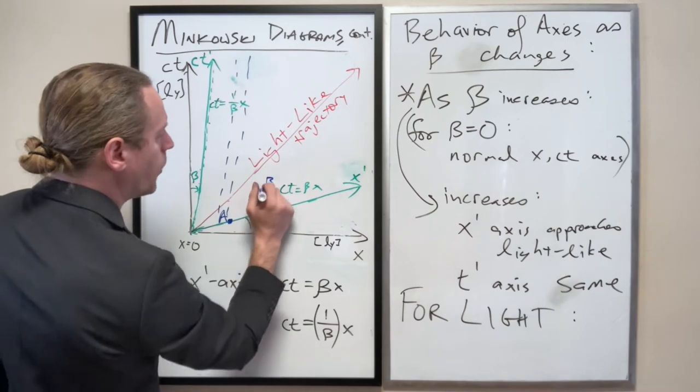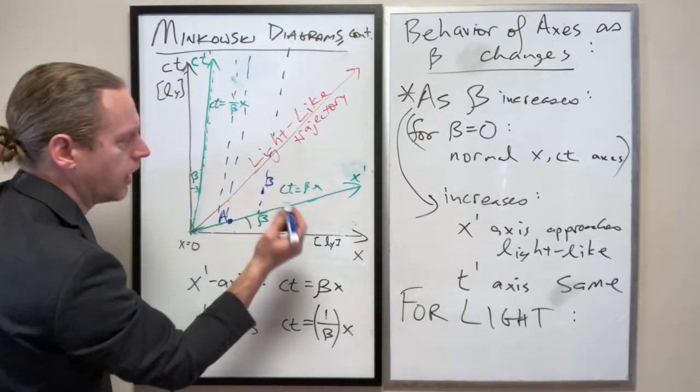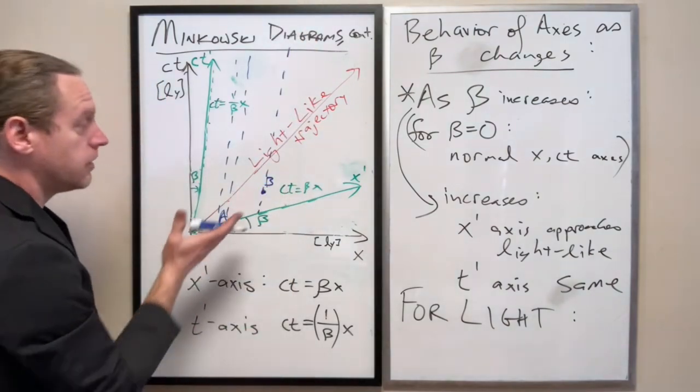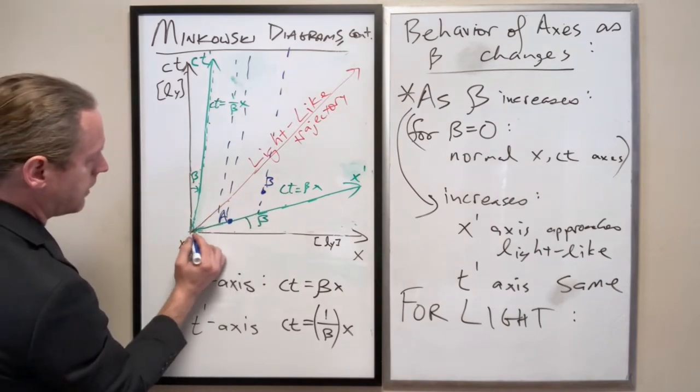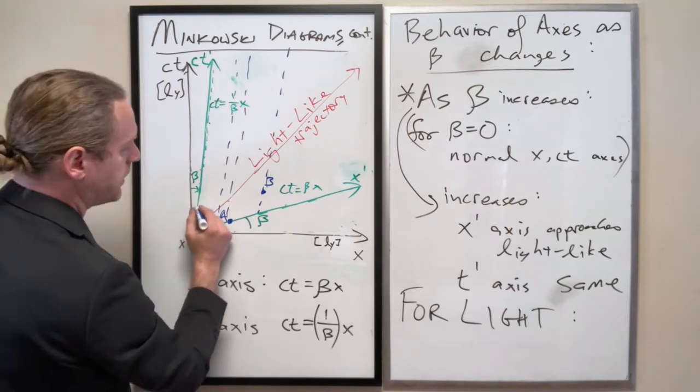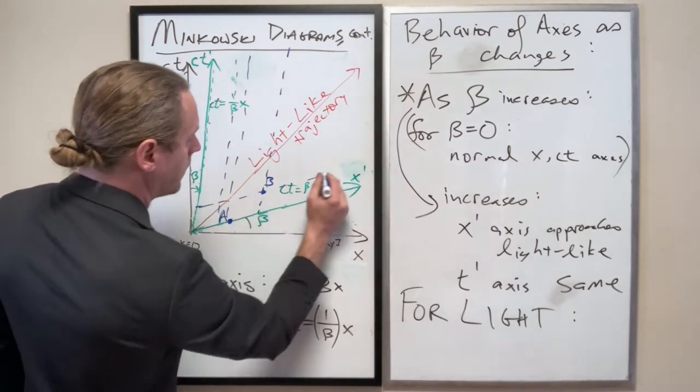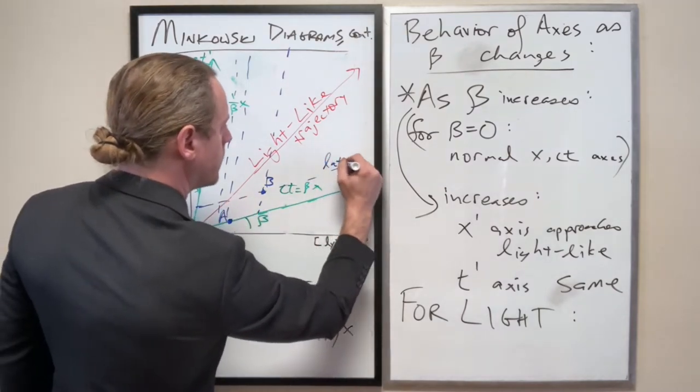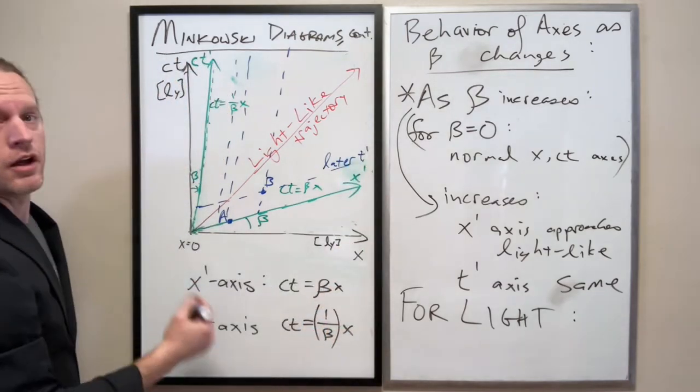The position of b will always be on this x-prime position. Similarly, everything here is at a position of t-prime of zero. Everything here is at some later time.